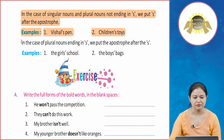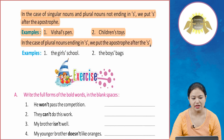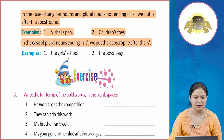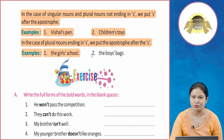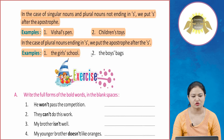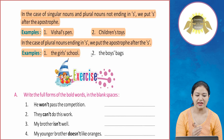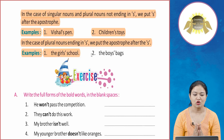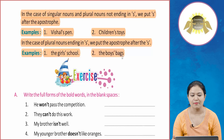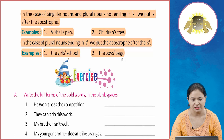In the case of plural nouns ending in 's', we put the apostrophe after the 's'. For example, 'the girls' school' — since 'girls' already ends in 's', we add only the apostrophe after it. Similarly, 'the boys' bag' — the bag belonging to the boys is written as 'boys'' with the apostrophe after the 's'.